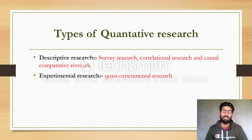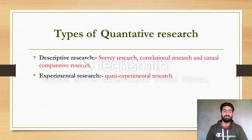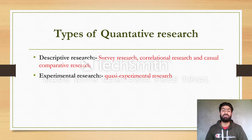The second major type of quantitative research is experimental research. There are many types of experimental studies, including pre-experimental, true experimental, and quasi-experimental research. I have mentioned only experimental research as one category here. The biggest difference between descriptive and experimental research is that descriptive research studies current situations of a phenomenon.